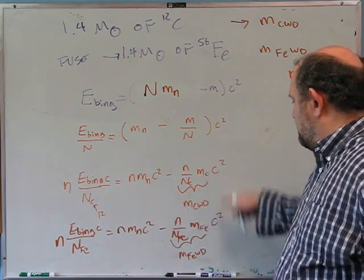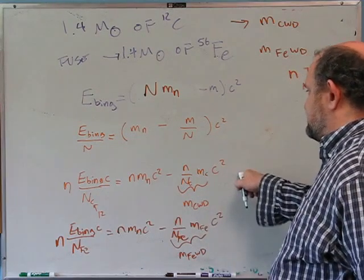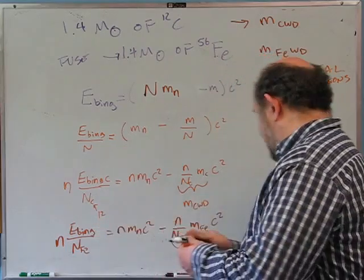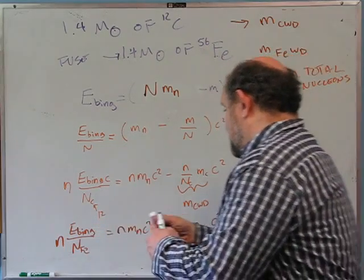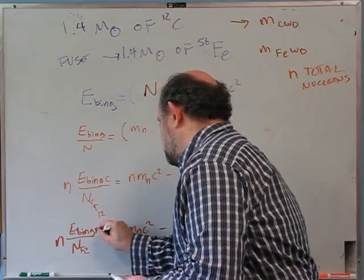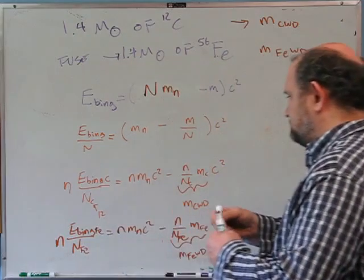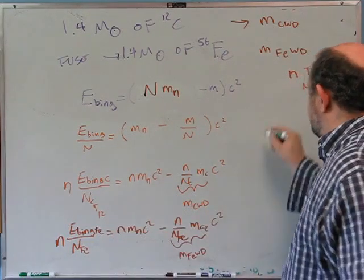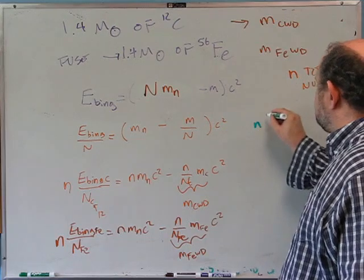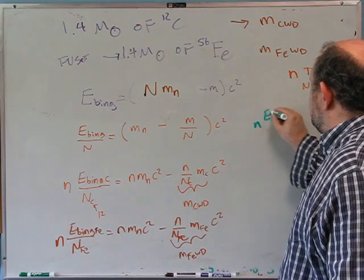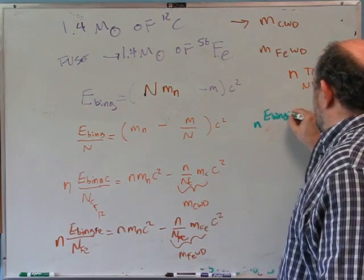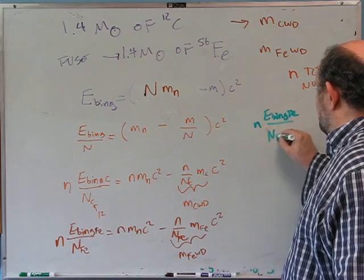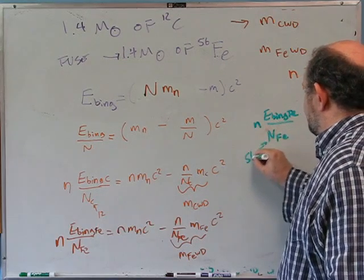Subtracting the carbon equation from the iron equation, the N·m_nucleon·c² terms cancel. On the right side I'm left with m_CWD·c² − m_FeWD·c². On the left side I have N × (BE_Fe/nucleon ÷ 56 − BE_C/nucleon ÷ 12) — but since I'm using binding energy per nucleon directly, it simplifies to N × (BE_Fe_per_nucleon − BE_C_per_nucleon).